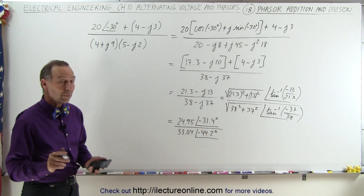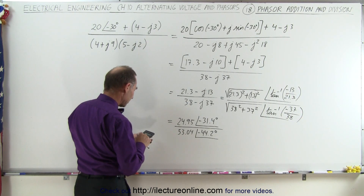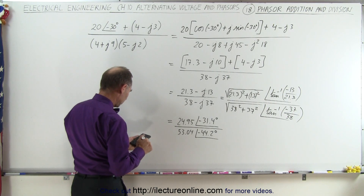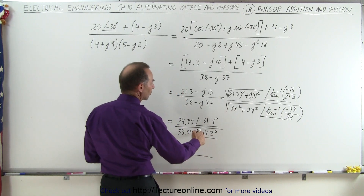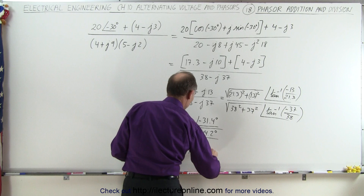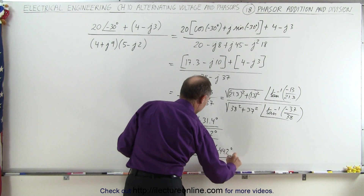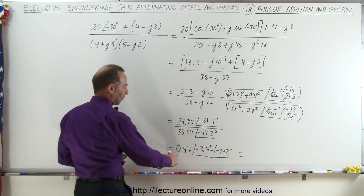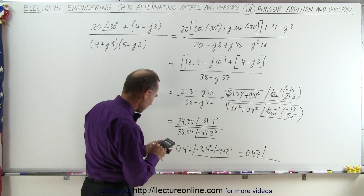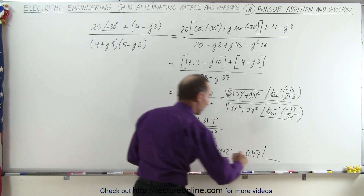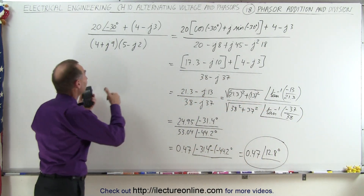So now what you do is divide the magnitudes: 24.95 divided by 53.04, that's equal to 0.47. With a phase angle, you subtract the denominator angle from the numerator angle: minus 31.4 minus a minus 44.2 degrees. So this eventually becomes 0.47 with a phase angle of 44.2 minus 31.4, which is 12.8 degrees. And that would be the result of that combination.